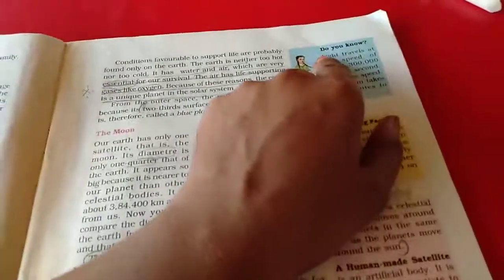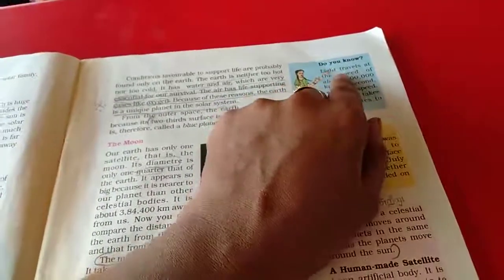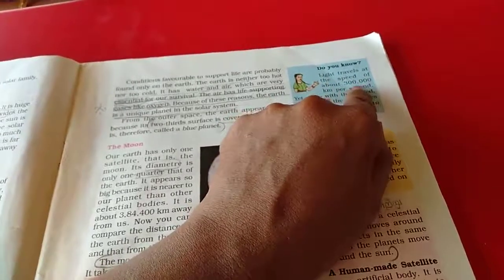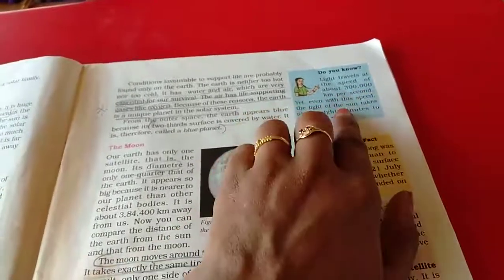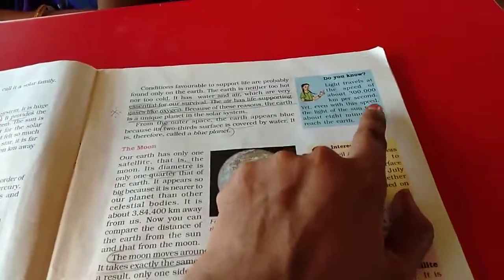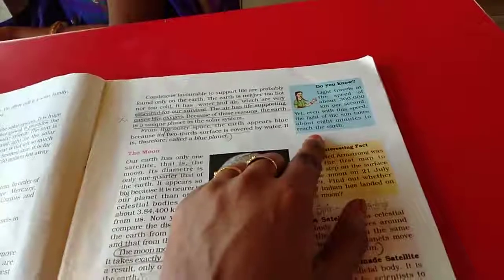Okay, friends. Here, they have given some information to you. Just read it. Do you know? Light travels at the speed of about 3000 km per second. Yet, even with this speed, the light of the sun takes about the 8th minute to reach the earth.